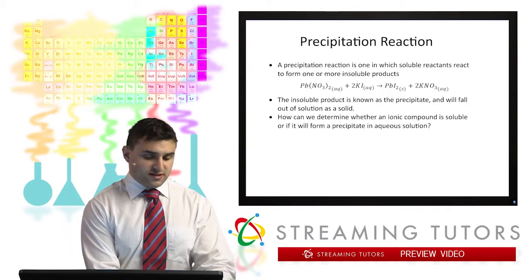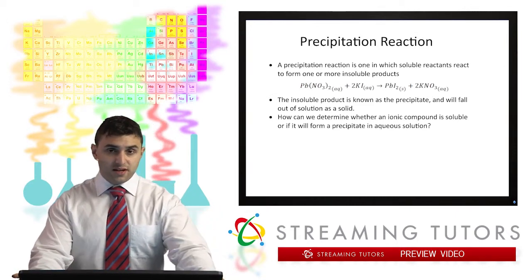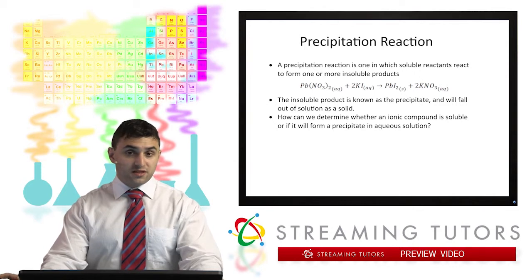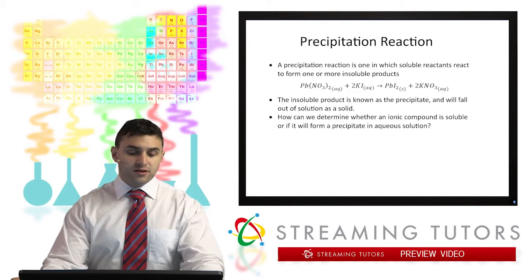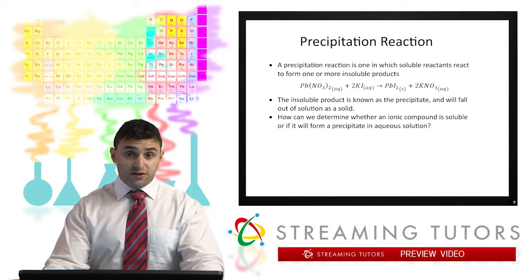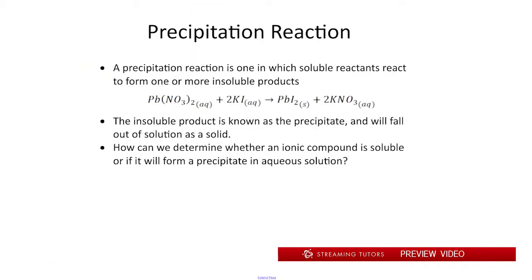We'll start off with precipitation reactions. A precipitation reaction is characterized by the precipitation of a solid, known as your precipitate. Let's take a look at this reaction. We see that everything on the left side is aqueous, meaning it's dissolved. But one of our products comes out of the solution as a solid. This solid here is our precipitate. It's going to fall out of the solution as a solid and settle on the bottom as a powder or a crystal.